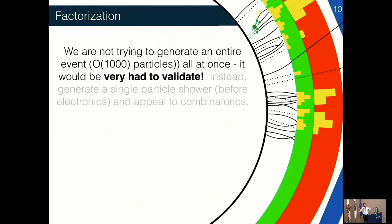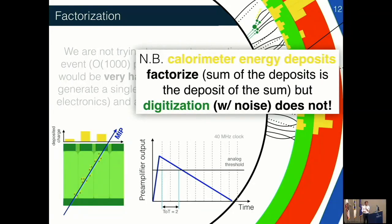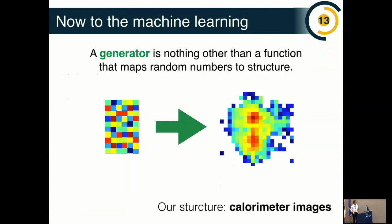A collision event at the Large Hadron Collider might produce a thousand particles, but we don't want to do a full end-to-end simulation — that would be very difficult. Instead, we take a more modest approach: we want to generate the interaction from a single particle hitting our detector. A nice feature we can exploit is a factorization property — the energy deposited from all particles is the sum of the individual energies per cell. So if we can simulate one interaction, we can simulate all of them. This means if we have a library we can mix and match showers to generate an enormous set of synthetic data.